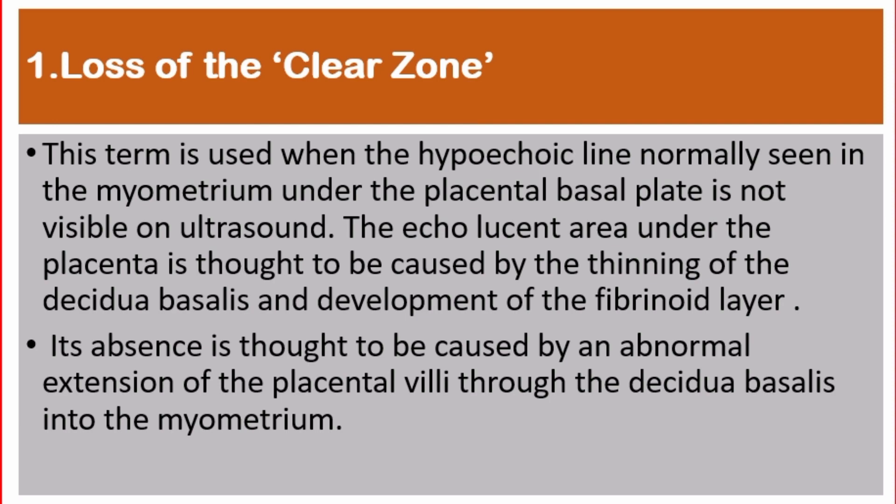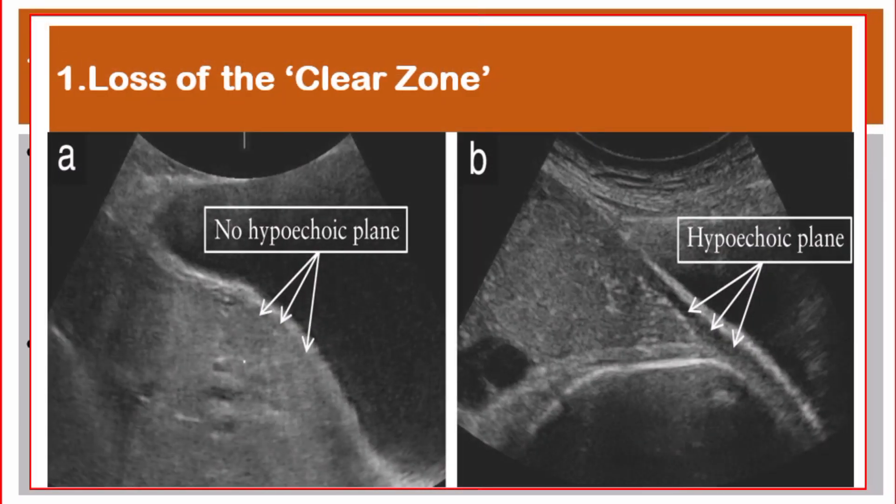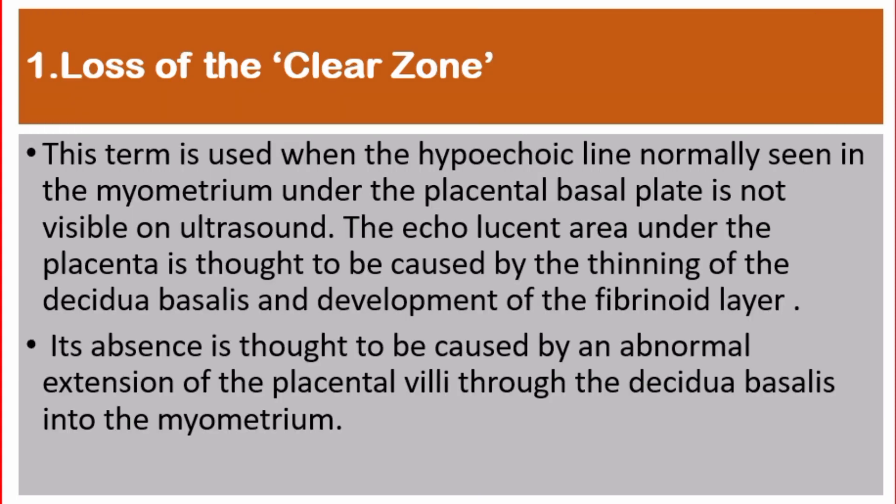Number 1: Loss of the clear zone. This term is used when the hypoechoic line, normally seen in the myometrium under the placental basal plate, is not visible on ultrasound. The echolucent area under the placenta is thought to be caused by the thinning of the decidua basalis and development of a fibrinoid layer. Its absence is thought to be caused by an abnormal extension of the placental villi through the decidua basalis into the myometrium.